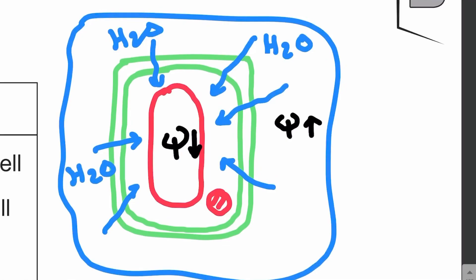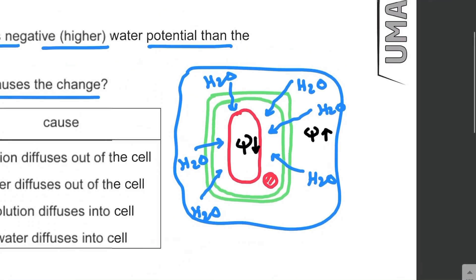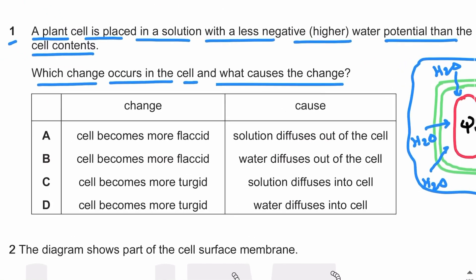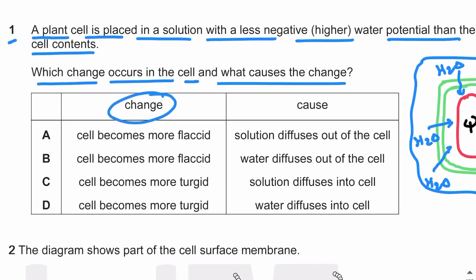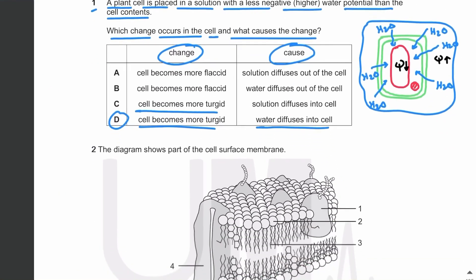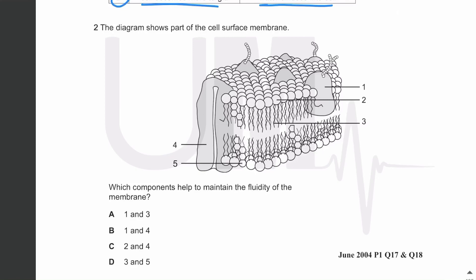Water flows from a higher water potential to lower water potential, from the solution into the cell. The change in the cell is that it will become more turgid, and what causes it is water diffusing into the cell. The answer is D. Let's move on to MCQ number two: the diagram shows part of the cell surface membrane — which components help to maintain the fluidity of the membrane?